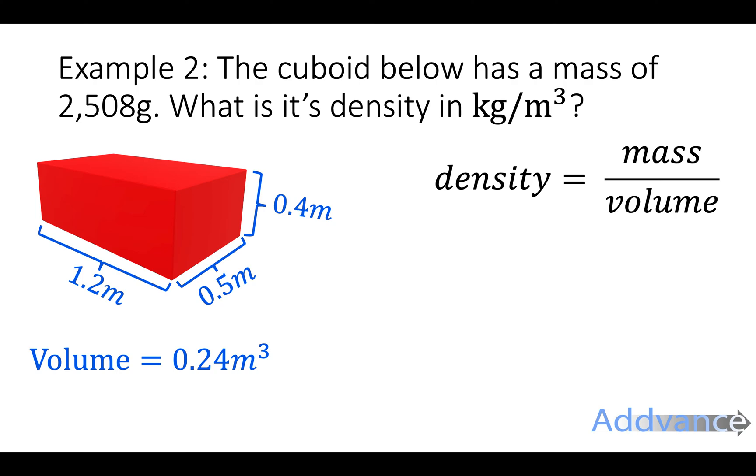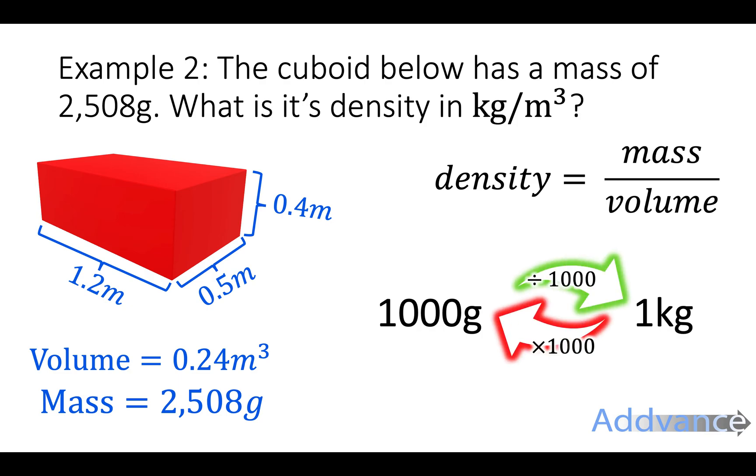Now, we've also got the mass, which is 2508 grams. And to go from grams to kilograms, we divide by 1,000. 2,508 divided by 1,000 is 2.508 kilograms.